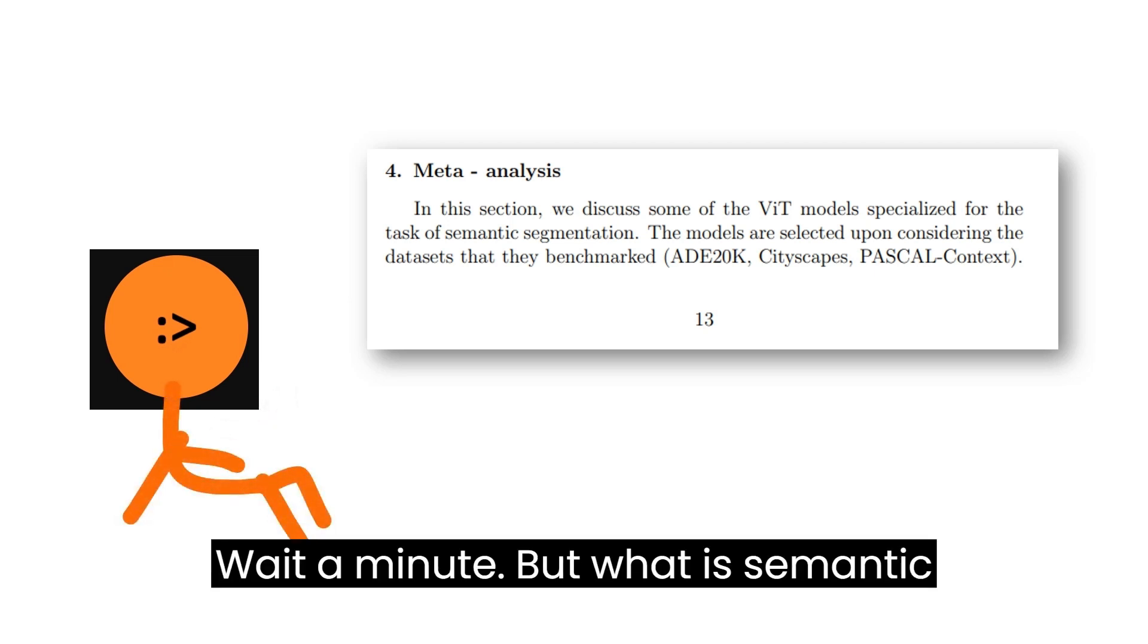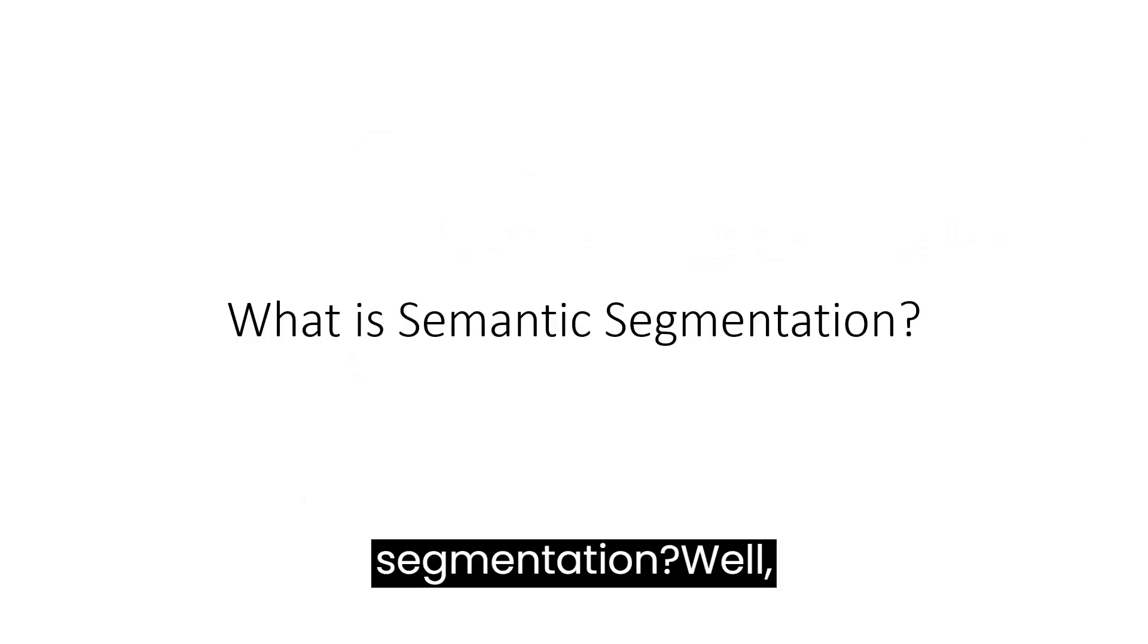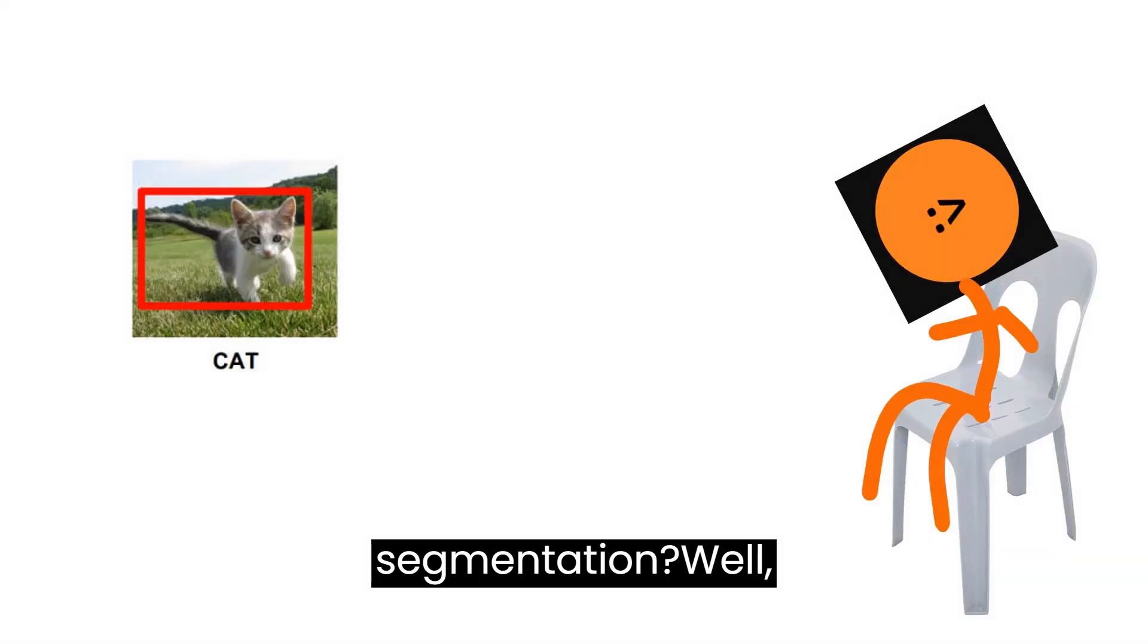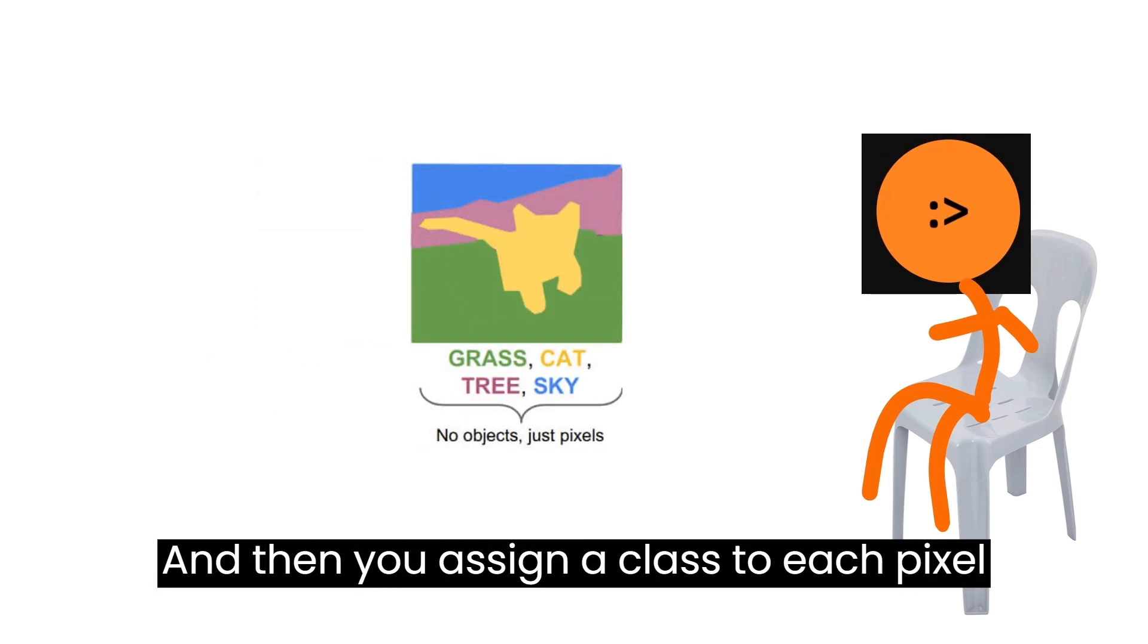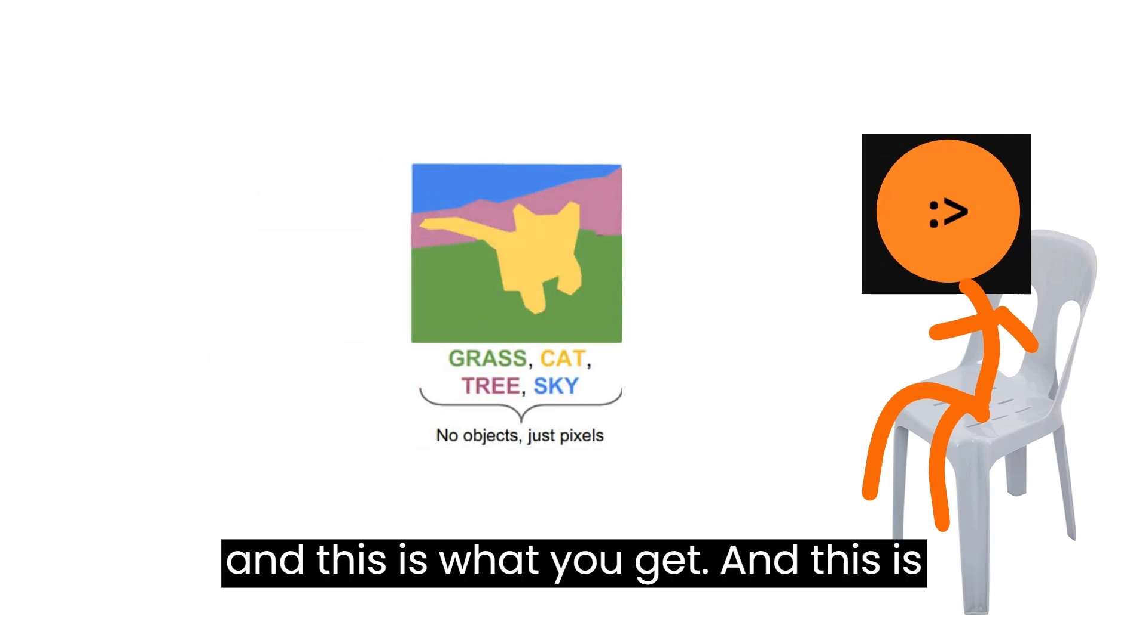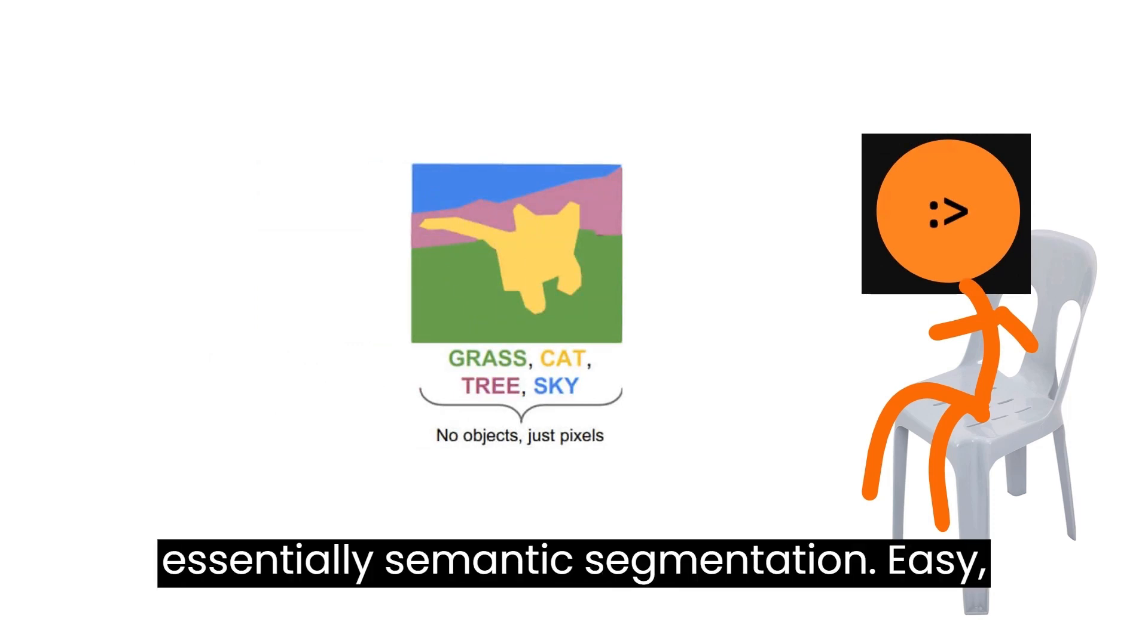Wait a minute, but what is semantic segmentation? Well, you see, let's say you have a picture, and then you assign a class to each pixel, and this is what you get, and this is essentially semantic segmentation. Easy, right?